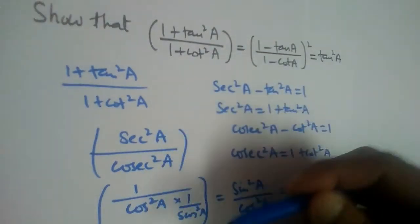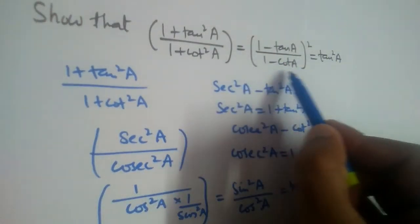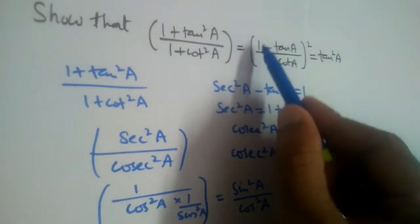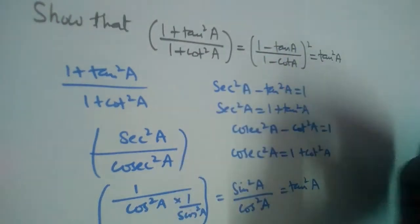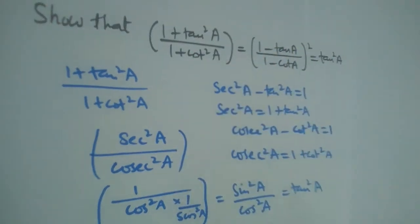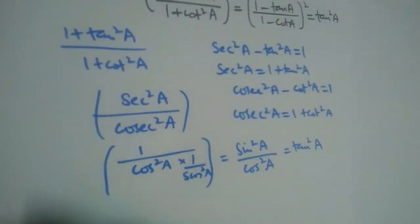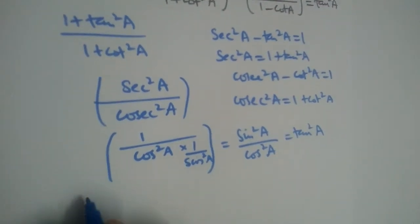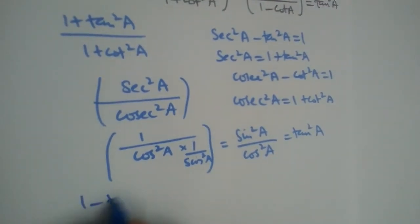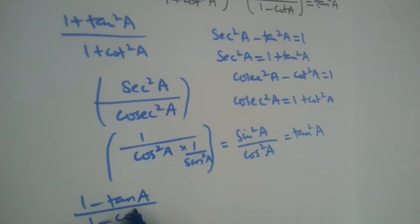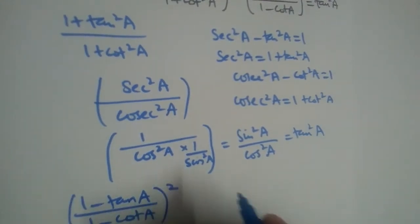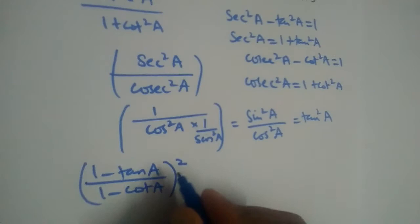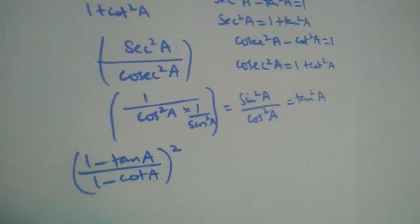Half of the problem is done. Now we need to prove that (1 − tan a) / (1 − cot a) whole square is also equal to tan²a.